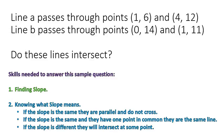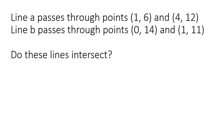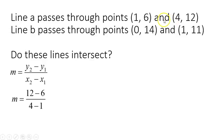The third option is if the slope is different, they will intersect at one point. We don't need to know where they intersect or what the equations of the lines are — all we need is the slope. Here's the slope formula: slope equals y₂ minus y₁ over x₂ minus x₁. For Line A, that's 12 minus 6 over 4 minus 1, which is 6 over 3, giving us a slope of 2.